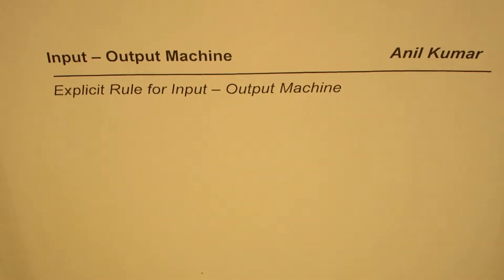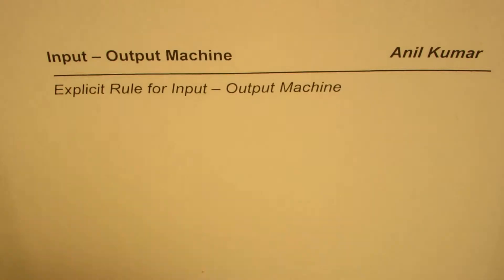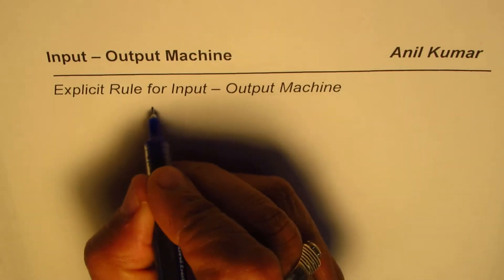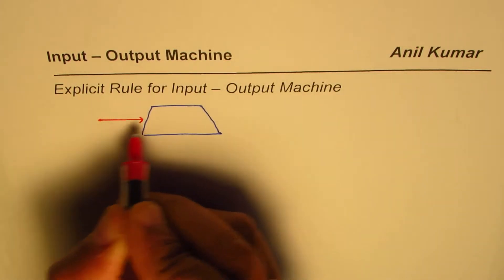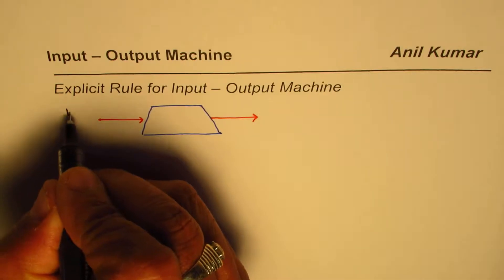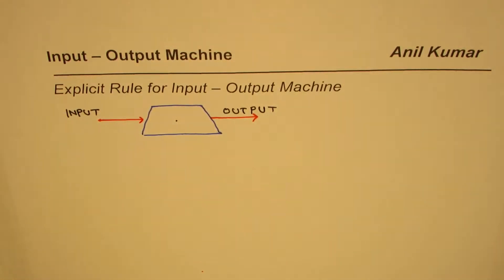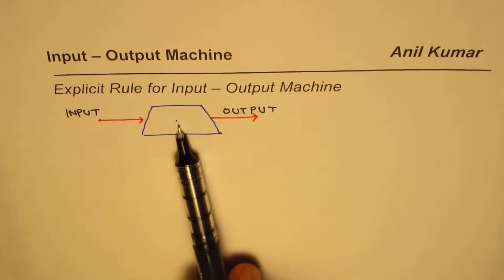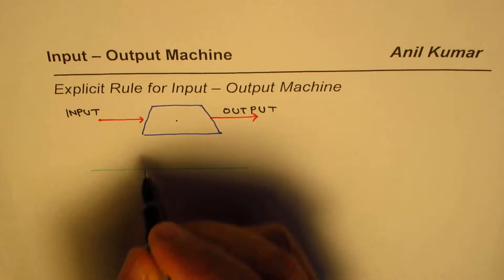I'm Anil Kumar and on request of my subscribers here is another video on input-output machines. We'll see how to develop an explicit rule for an input-output machine. Basically, we are looking at a machine in which if you provide some input — some numbers — it turns out some outputs. Whatever operation is performed inside the machine changes the input to a different kind of output, and that's the kind of machine we have. We need to find out the rule.